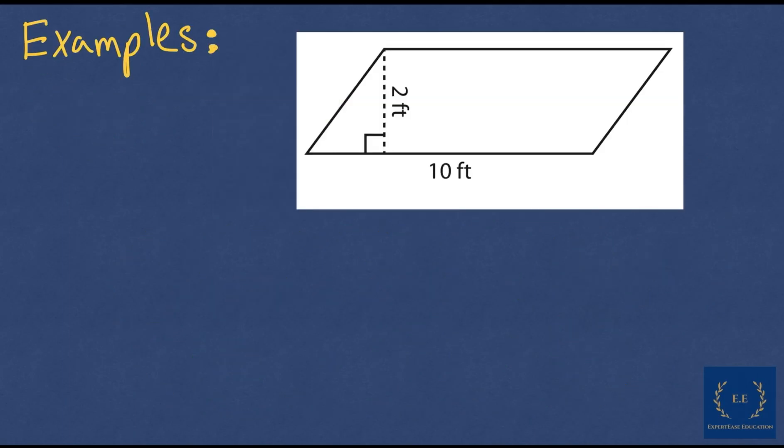Now let's have an example to apply this. In front of us we have a parallelogram where we have the base as 10 feet. Always identify the base and the height first. We have the height which is 2 feet. We have successfully identified the base and the height.